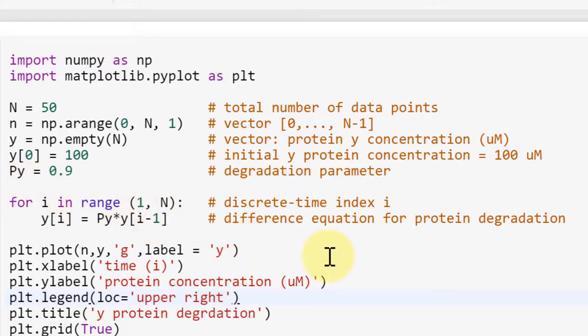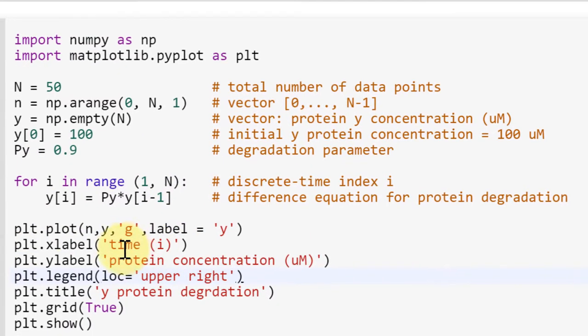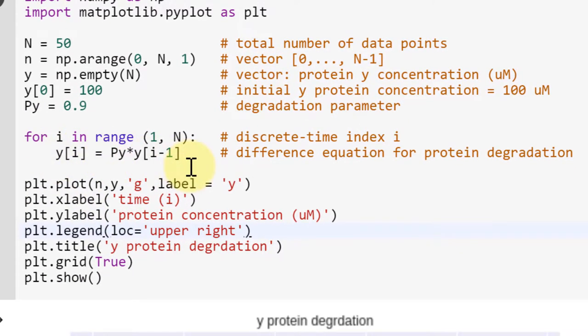And Py is the degradation parameter and the value is 0.9. And we have this for loop. So i is discrete time index goes from 1 up to N. This N is not included meaning that we go from 1 up to 49 actually.